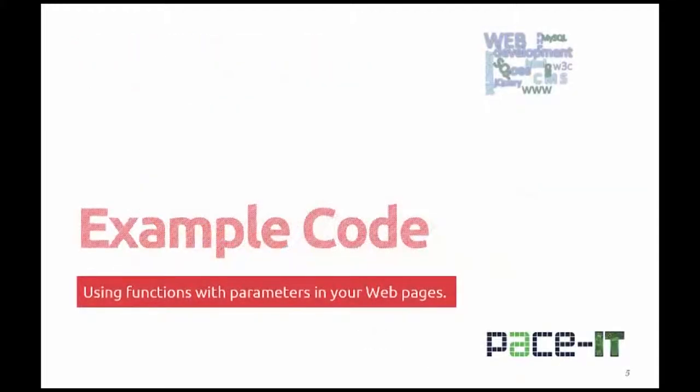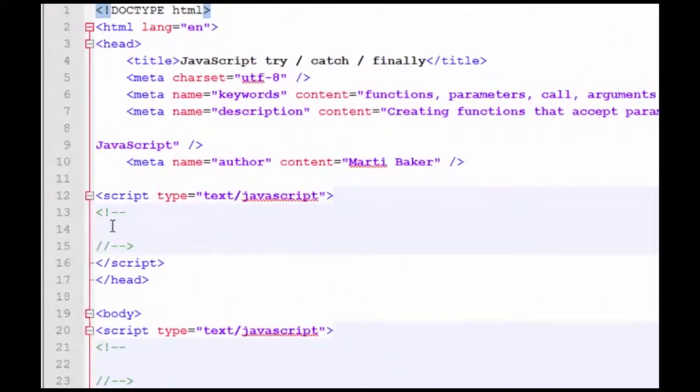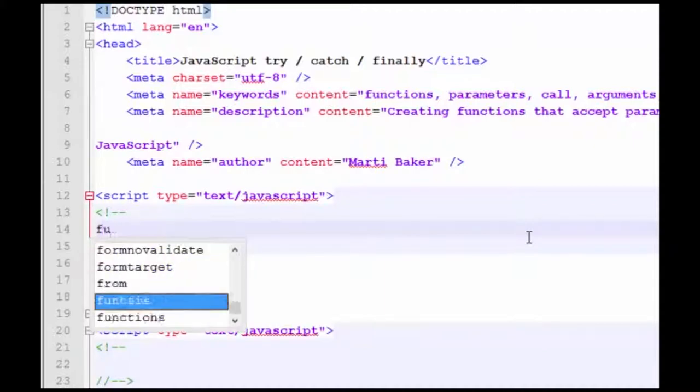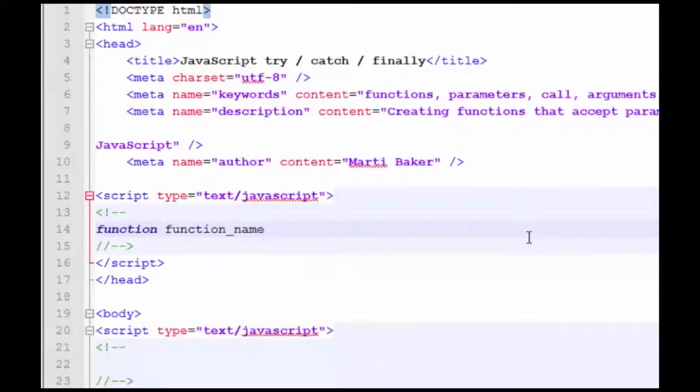It's time to look at some code. Starting with the basic syntax of declaring a function with parameters and the call to the function with arguments. So let's write the function first. The keyword function and the syntax we're showing, we're going to give the function a name.